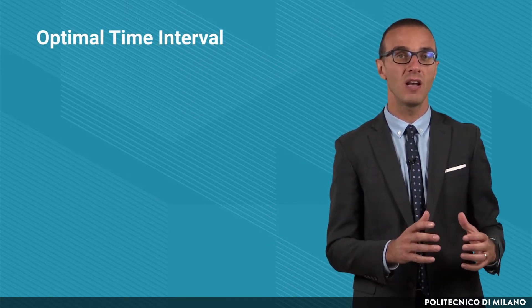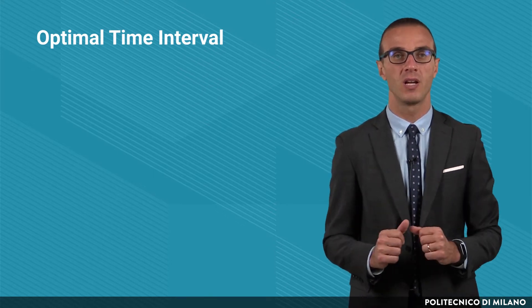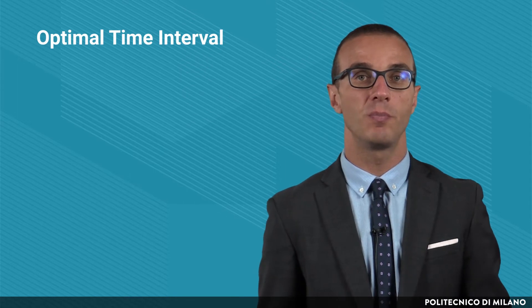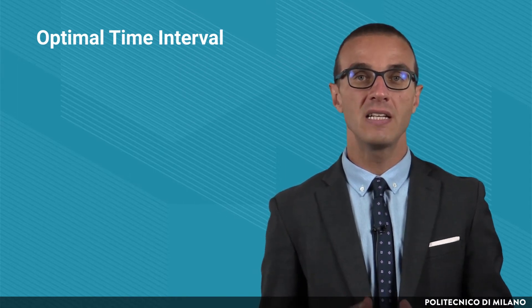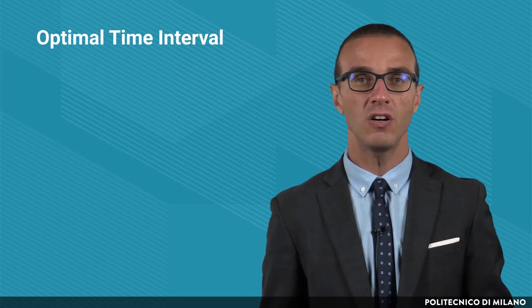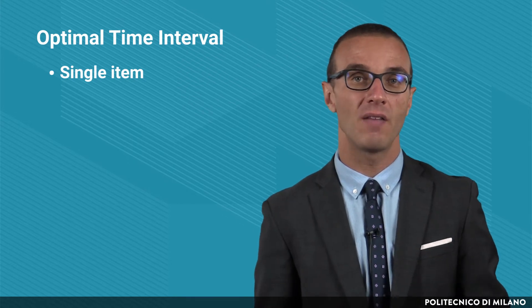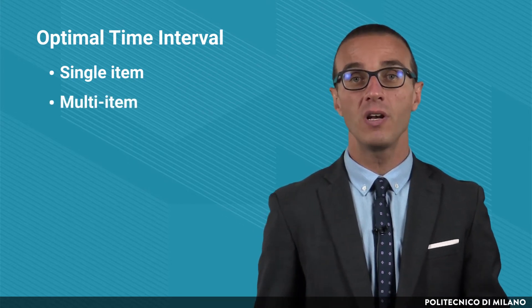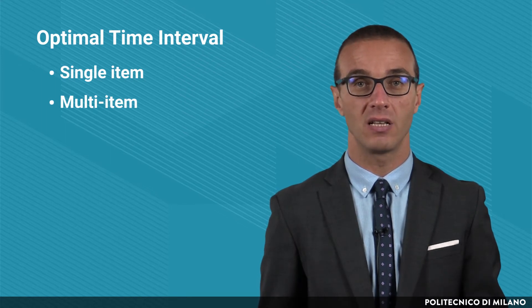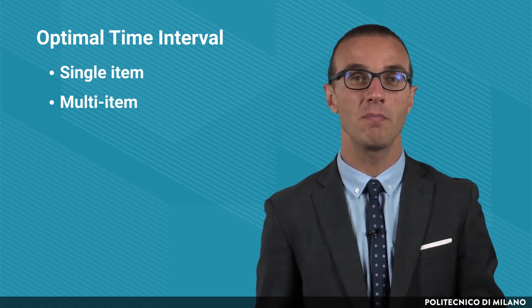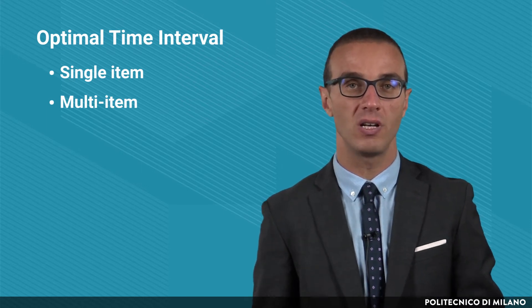Once the optimization of the reorder point model has been clarified, we can switch to the periodic review one. With regard to this second model, the optimization consists in finding the optimal time interval between two subsequent orders. The same assumptions of the EOQ model optimization must be considered. The order interval can be determined either for each item separately — in this case the optimal t is determined by considering the relevant cost for the item — or for all the items that are jointly purchased, in which case the optimal t is determined by minimizing the sum of the costs of all the items jointly purchased.